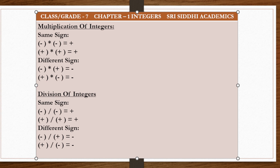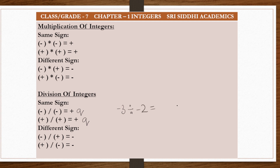Now let's look at division of integers. When two integers of the same sign are being divided, the quotient we get will always be positive. However, the quotient might not be an integer. Suppose I divide minus 3 by minus 2 — the answer will be a decimal, 1.5. A decimal value is not an integer, but the sign rule is the same as in multiplication.